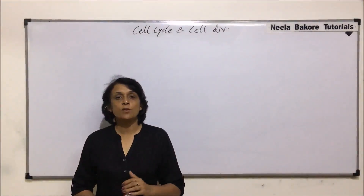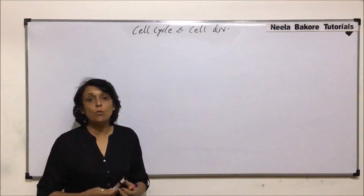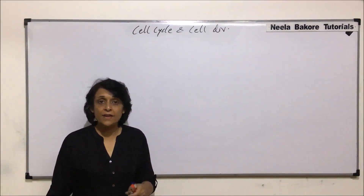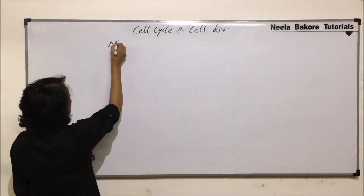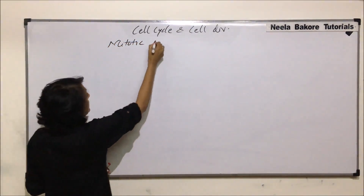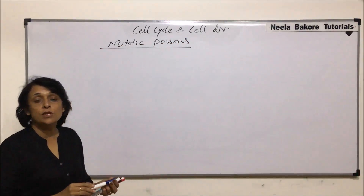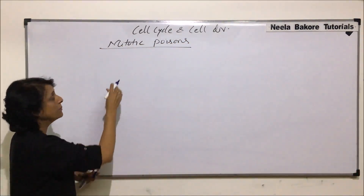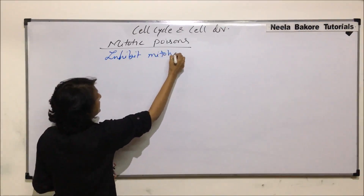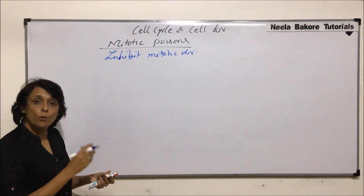In this video we will be talking about mitotic poisons and cancer. We have already seen what mitogens are — substances which stimulate or trigger mitotic division. So mitotic poisons would be those substances which are going to inhibit the cell division, either stop or slow down the mitotic division.